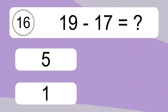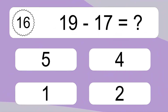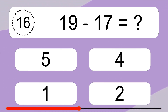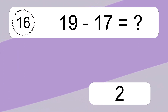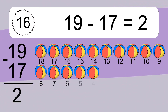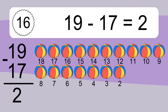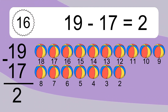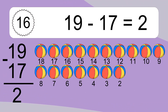19 minus 17 equals what? 19 minus 17 equals 2. Let's count it: 18, 17, 16, 15, 14, 13, 12, 11, 10, 9, 8, 7, 6, 5, 4, 3, 2.